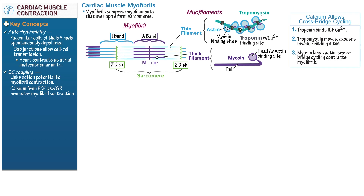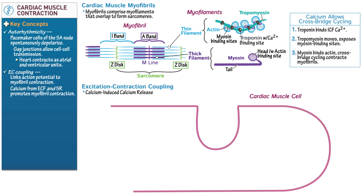Contraction via the sliding filament mechanism occurs as in skeletal muscle. Next, let's see how excitation-contraction coupling links the action potential to sarcomere shortening and therefore cardiac muscle contraction. Excitation-contraction coupling in cardiac muscle cells relies on calcium-induced calcium release. Now set up the diagram of a cardiac muscle cell — we'll show events leading to contraction on the left and events leading to relaxation on the right. Draw the sarcolemma with an invaginating T-tubule and show an L-type calcium channel in the membrane of the T-tubule.